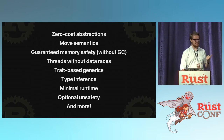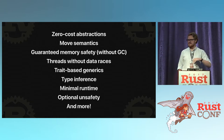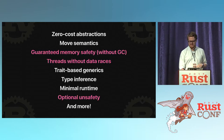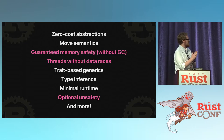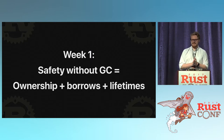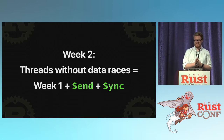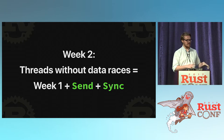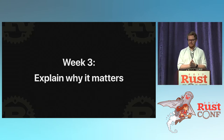You've probably all seen this list or something like it. This is basically a slightly modified version of the list on the Rust website homepage of the cool things about Rust. From this list I picked three things: guaranteed memory safety without garbage collection, threads without data races, and optional unsafety. So week one is safety without garbage collection — basically ownership, borrowing, and lifetimes. Week two is threads without data races, covering Send, Sync, concurrency and parallelism safety. Week three explains why all of it matters.